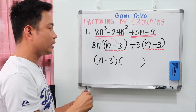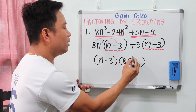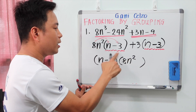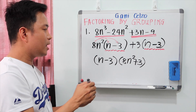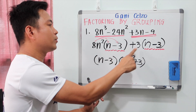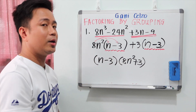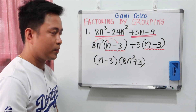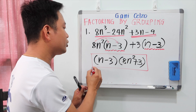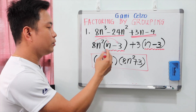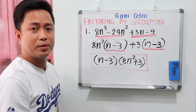So n minus 3 is taken out for both groups. For the second factor, we write the outside terms: 8n squared plus 3. So the final answer is (n minus 3)(8n squared plus 3). If you'd like to check your answer, you can use the distributive property and you should get back that four-term polynomial.